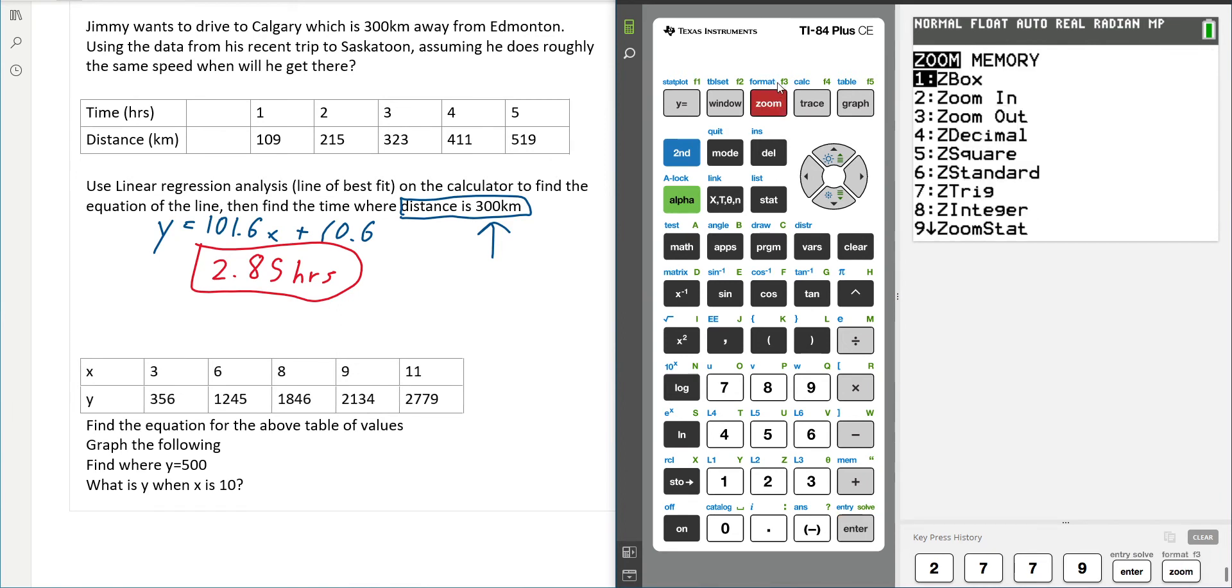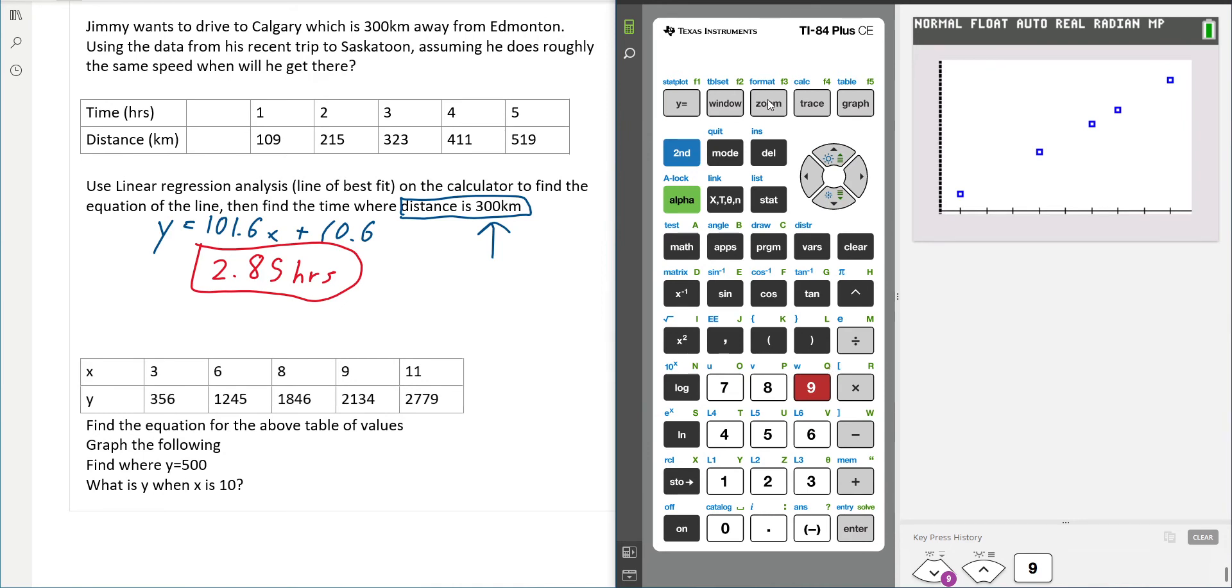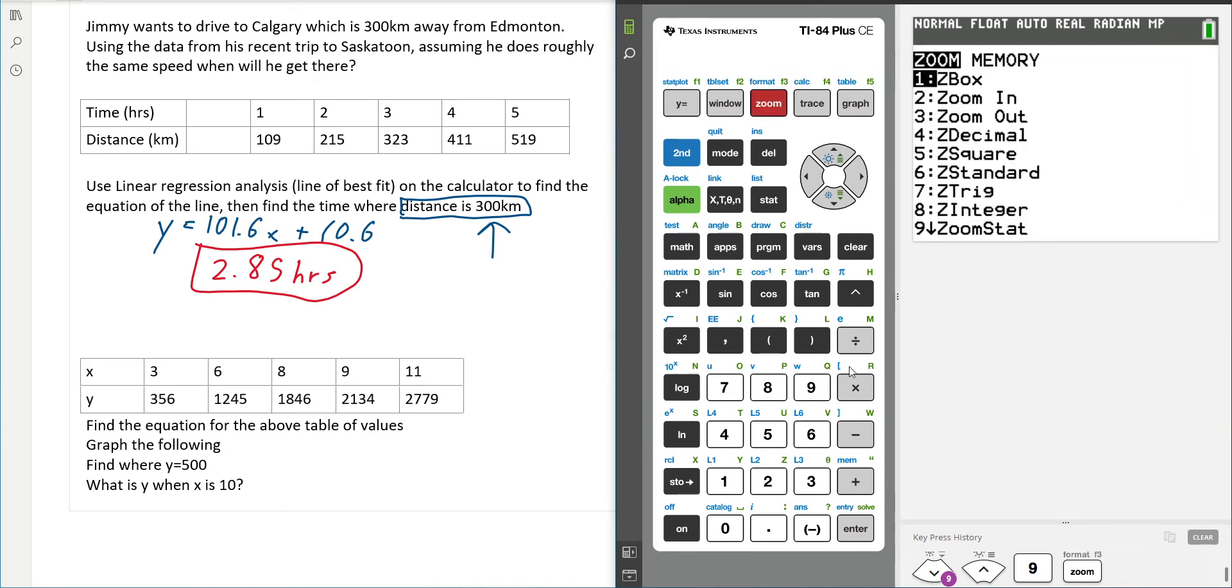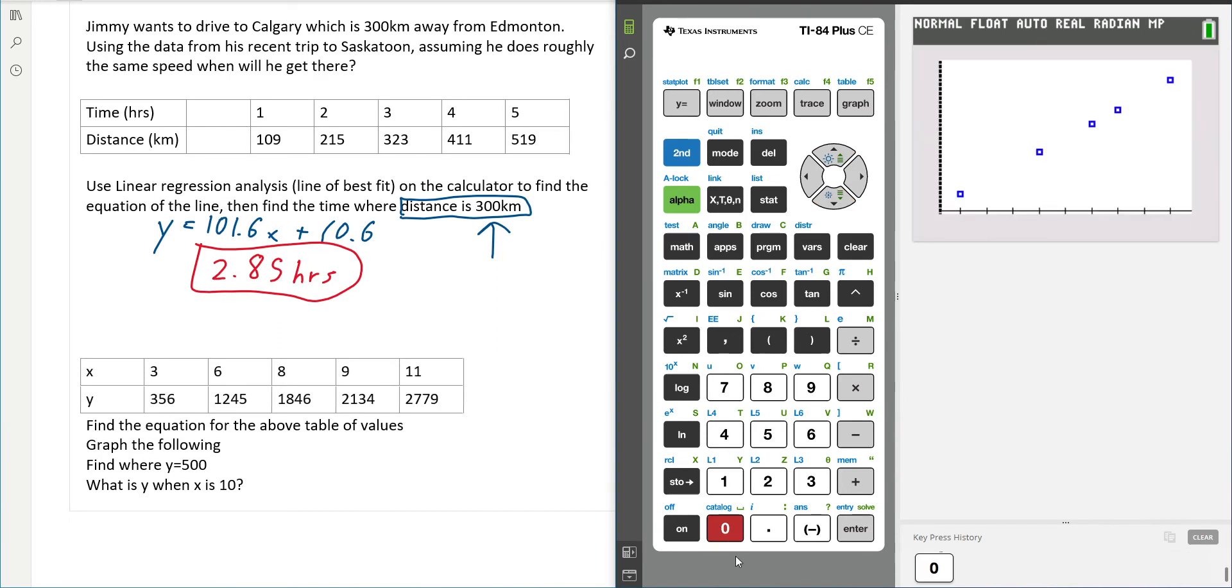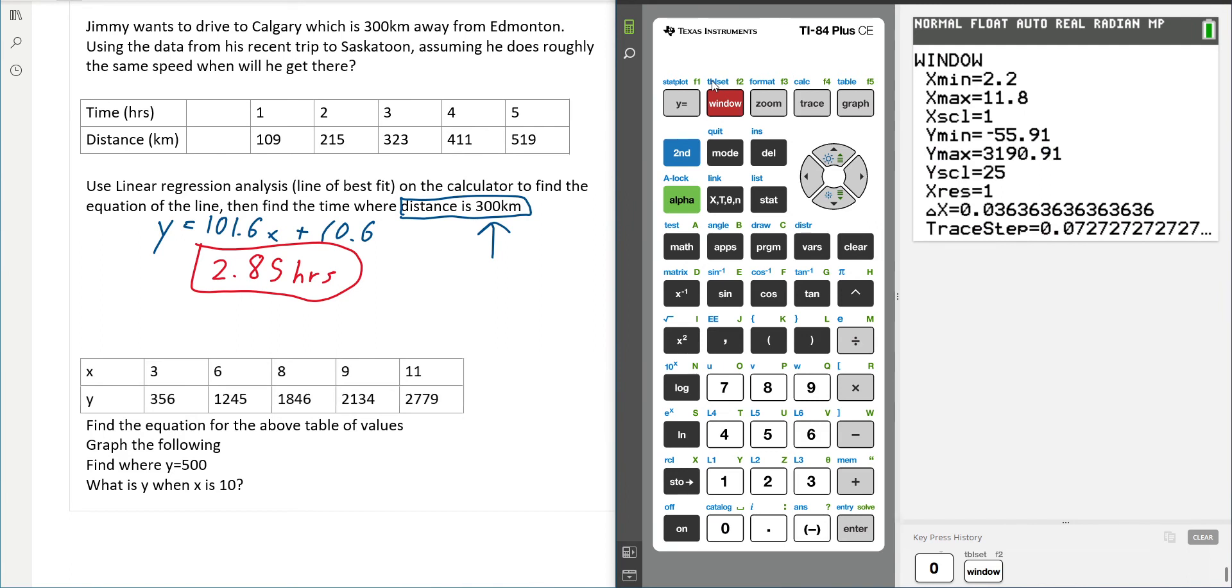Now I click zoom 9. Remember, this is the statistical zoom, so it's zooming so that we can see all of our data on our graph. Something you could also just do is zoom fit, which is all the way here, zoom zero. So it fits.